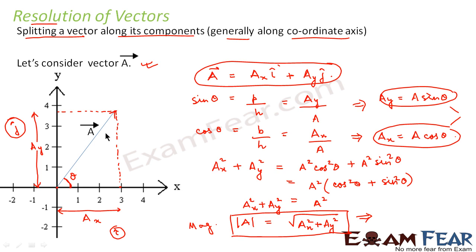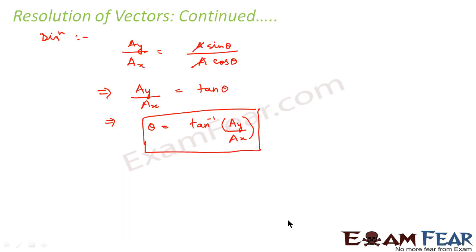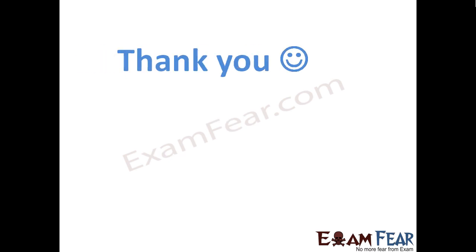Whenever we talk of any vector, two things are important: magnitude and direction. First, we learned how to write a vector in terms of its components along the x and y axes. Second, the magnitude of any vector can be written in terms of its components. Third, the direction of the vector can also be represented in terms of its components along the x and y axes respectively.